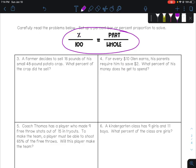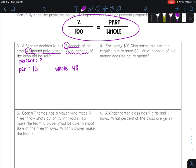So number three, a farmer decides to sell 16 pounds of his small 48-pound potato crop. So what percent of the crop did he sell? So again, we don't know the percent. We know the part, and we know the whole. So he's going to sell 16 pounds of it, but he had 48. So I'm going to say the part is the 16 pounds that he sells, and the 48 is the total that he used to have. So to set up our proportion now, we have all three parts.